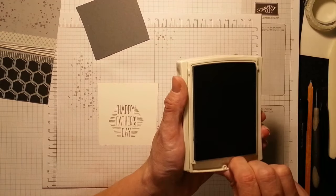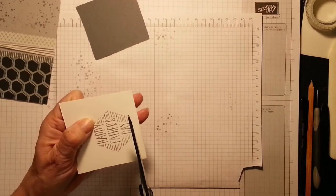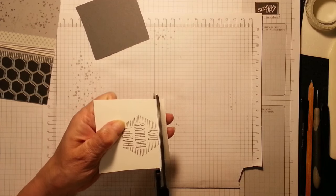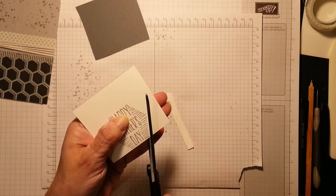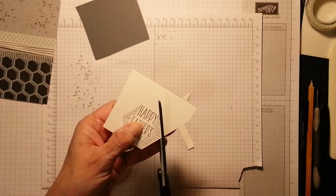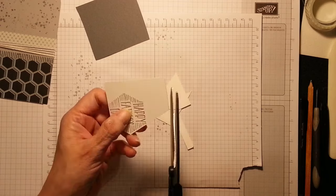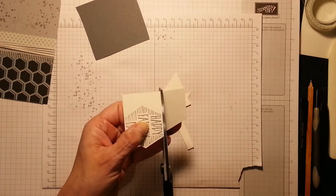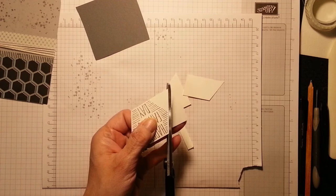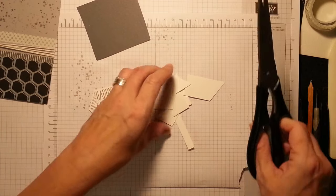I'll stamp the inside in a moment because I want to make sure that's level. So I'll do this first. And I'm just going to quickly fussy cut. I'm only going to leave a small white border. But some people have the stamps and not the framelits or the dies. So we can show you just both ways how you can achieve this look. And that was quicker than pulling out the big shot.